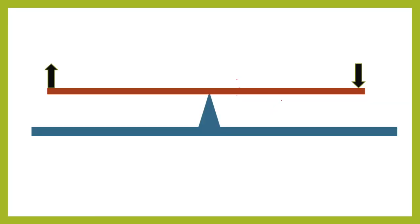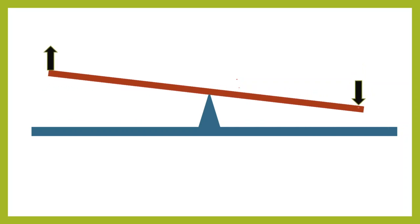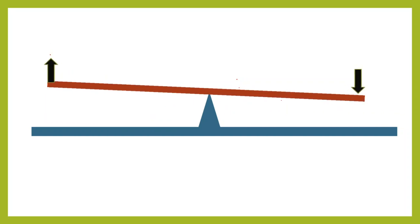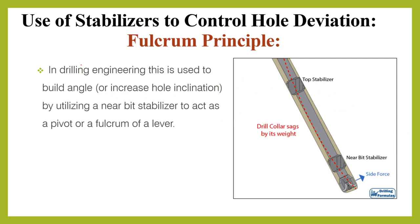In this animation, we can see that when the weight moves down, the load on the other side moves up. This principle can be used in drilling engineering to build angle or increase hole inclination by utilizing a near-bit stabilizer to act as a pivot or fulcrum of a lever. In this BHA, we put in a near-bit stabilizer, and the other stabilizer will be further away as the string stabilizer, as mentioned in the first episode. The drill collar will sag by its weight, and the bit side force will move up, causing the angle to build.